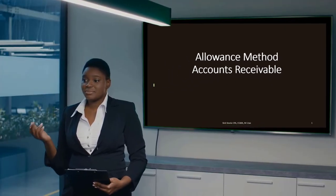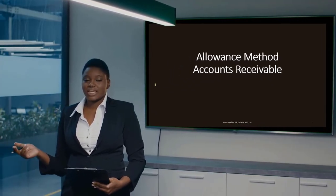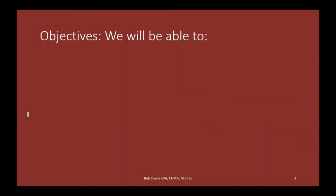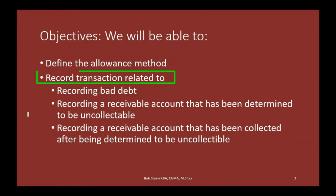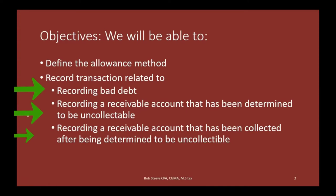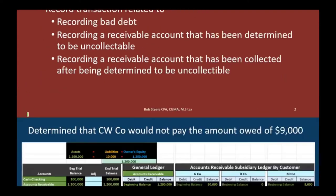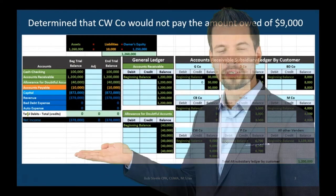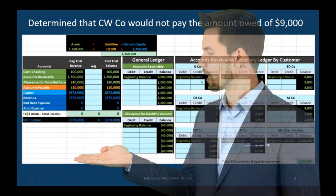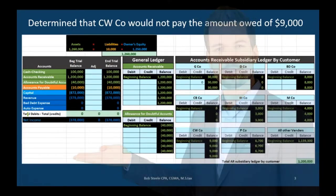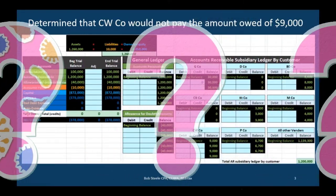In this presentation we're going to take a look at the allowance method, which is related to the accounts receivable account. We will be able to define the allowance method, record transactions related to recording bad debt, recording a receivable account that has been determined to be uncollectible, and recording a receivable account that has been collected after being determined uncollectible. We're going to look at the most common transactions when dealing with the allowance method.